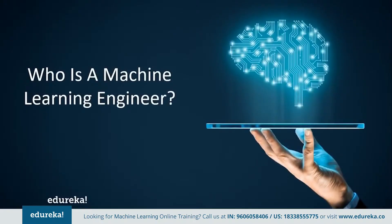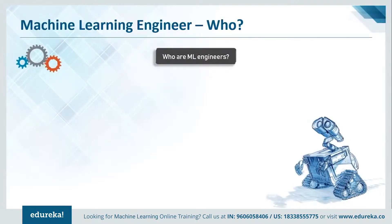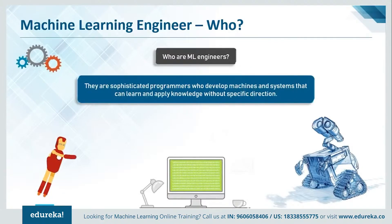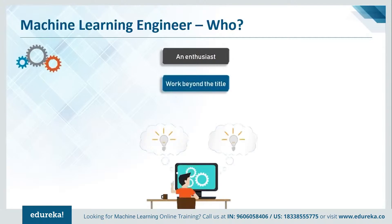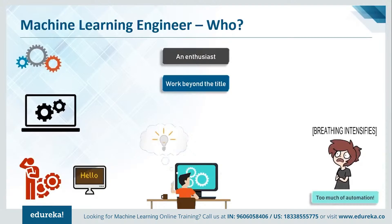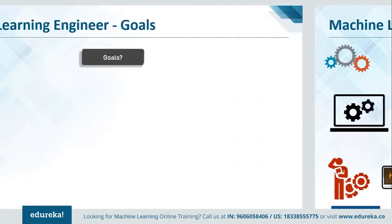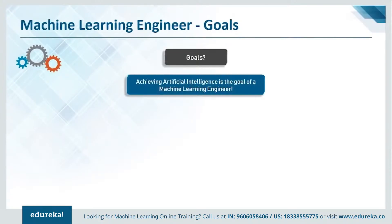Now that we've established a foothold on machine learning, let's understand who a machine learning engineer actually is. Machine learning engineers are sophisticated programmers who develop machines and systems that can learn and apply knowledge without any specific direction. They're enthusiastic computer science programmers whose focus goes beyond programming machines for specific tasks — they create programs that enable machines to take actions without being specifically directed. The goal of a machine learning engineer, in the simplest terms, is to achieve artificial intelligence.